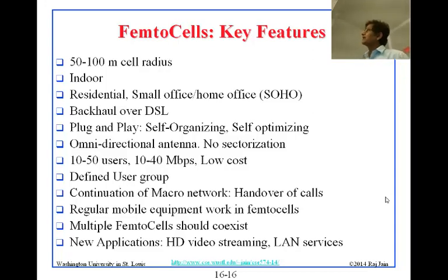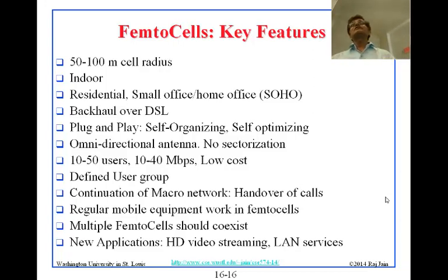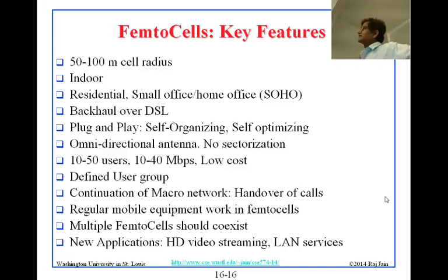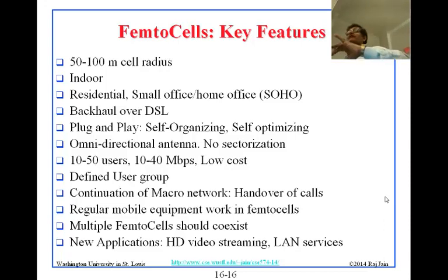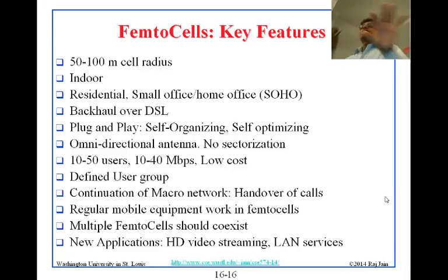Key femtocell characteristics: 50 to 100 meters cell radius, indoor, residential and SOHO use, backhaul over DSL. It is plug and play — customer installable, just like DSL equipment, you get something in the mail and connect it. It is self-organizing and self-optimizing, finding the right power level and parameters automatically. It uses an omni-directional antenna with no sectorization — just a simple single antenna. It supports 10 to 50 users at 10 to 40 megabits, low cost, with a defined user group.